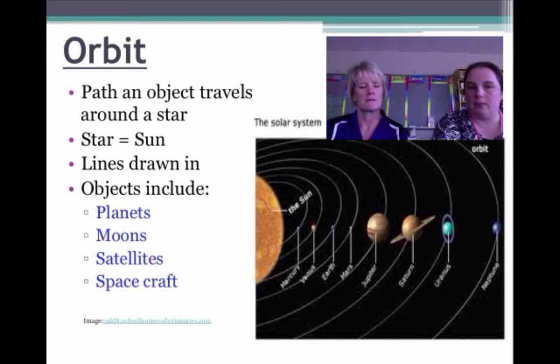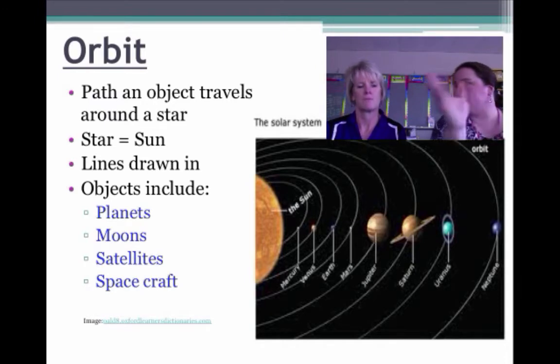The objects include planets, moons, satellites, and spacecraft. And we had talked about in our previous video, but a moon is what's called a natural satellite because it revolves around us. And then we revolve around the sun.